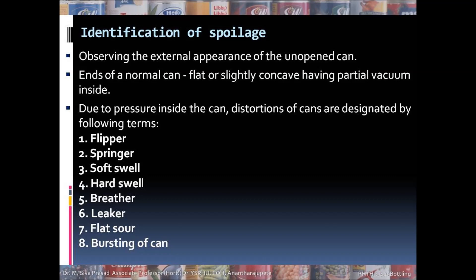In the case of cans which are fit for consumption, the bottom and top will be flat or slightly concave. But cans that are not fit for consumption will have slightly distorted, popped out, bulged, or swollen ends — either top or bottom. These distorted cans are given certain names based on their type of spoilage: flipper, springer, soft swell, hard swell, breather, leaker, flat sore, and burst can.